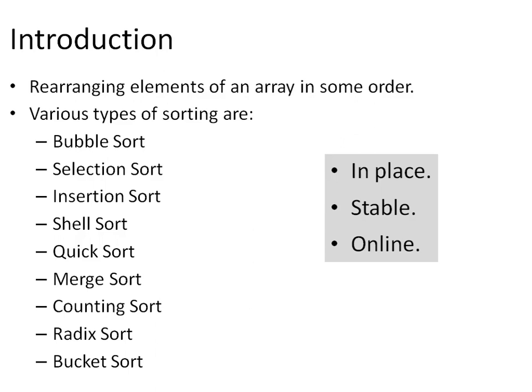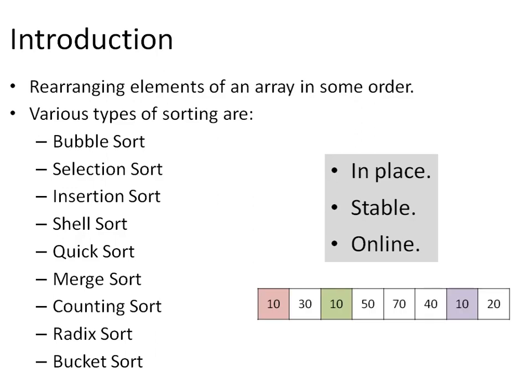By stable sorting algorithm we mean if the relative ordering of elements having same key values remains the same before and after the execution of the sorting algorithm, then the algorithm is said to be stable, as it maintains the relative ordering even after the completion of the sorting process. For example, in the given sequence we have the element 10 appearing three times. If the sorting algorithm is stable, then the sequence in which the three tens are appearing will remain the same even after the execution of the sorting algorithm.